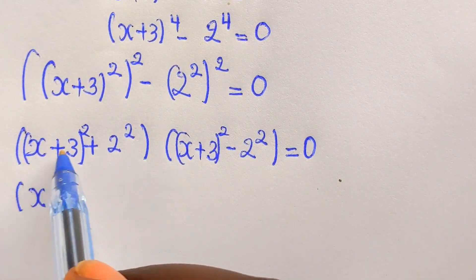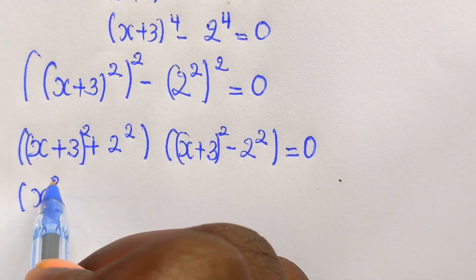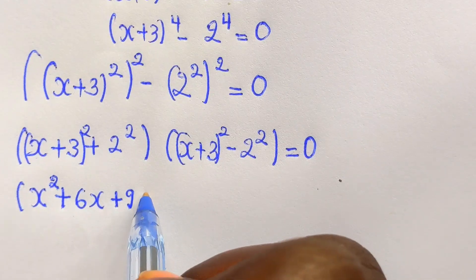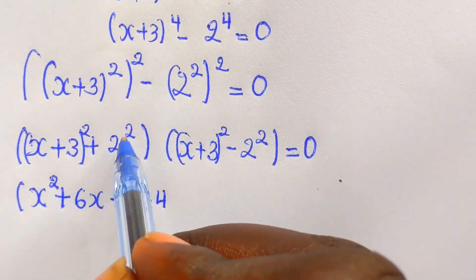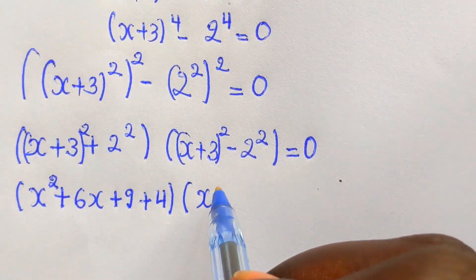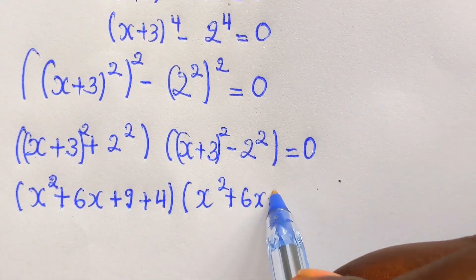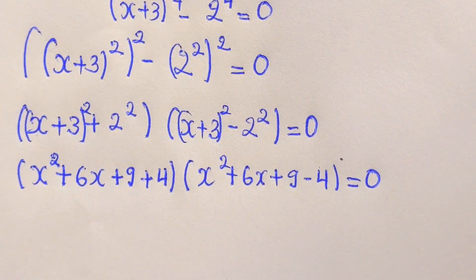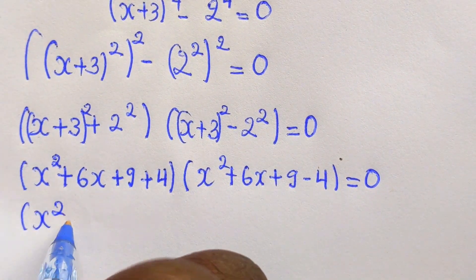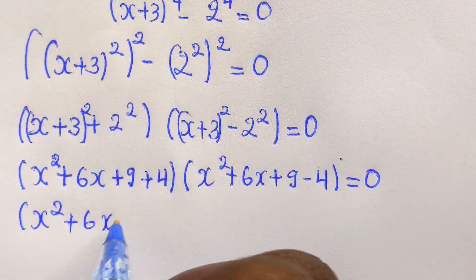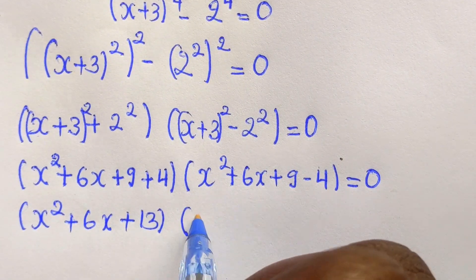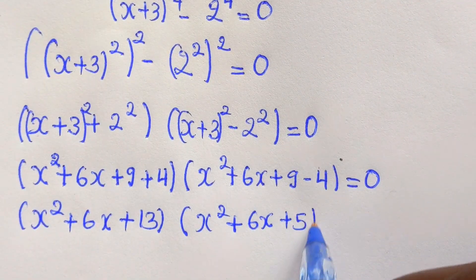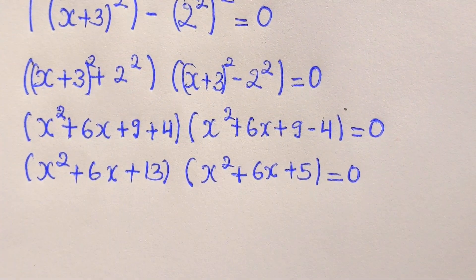Now we expand (x + 3)² to get x² + 6x + 9. So the first factor becomes x² + 6x + 9 + 4, and the second becomes x² + 6x + 9 - 4, giving us (x² + 6x + 13)(x² + 6x + 5) = 0.